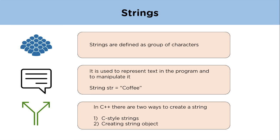In C++ there are two ways to create a string. The first is C-style strings — in C-style strings, a collection of characters is stored in the form of arrays; they are basically arrays of type character. The second way is using string objects — we can create a string object to hold a string. They are implemented in the standard library, which we must include in the program using hash include.